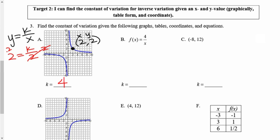Now for B, B is actually already in the form y equals k over x. So I can just say that my k is 4. Easy enough.